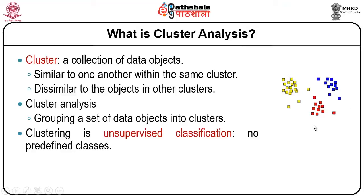By looking at this picture, we can clearly say that the given list of data objects belongs to three different cluster values. Those that are similar to one another in terms of properties are placed within the same cluster; those which are dissimilar belong to other clusters. Intra-cluster — within the cluster — will have similar properties, whereas inter-cluster will have a large difference in property values.